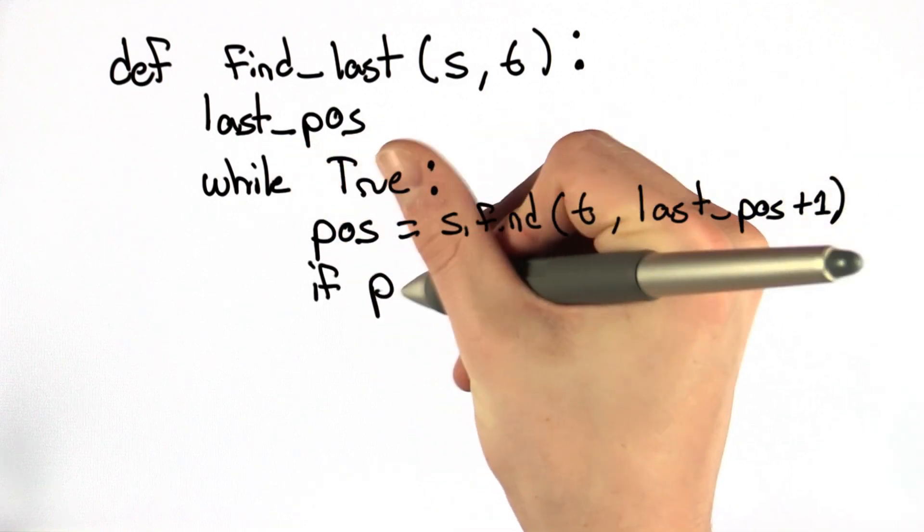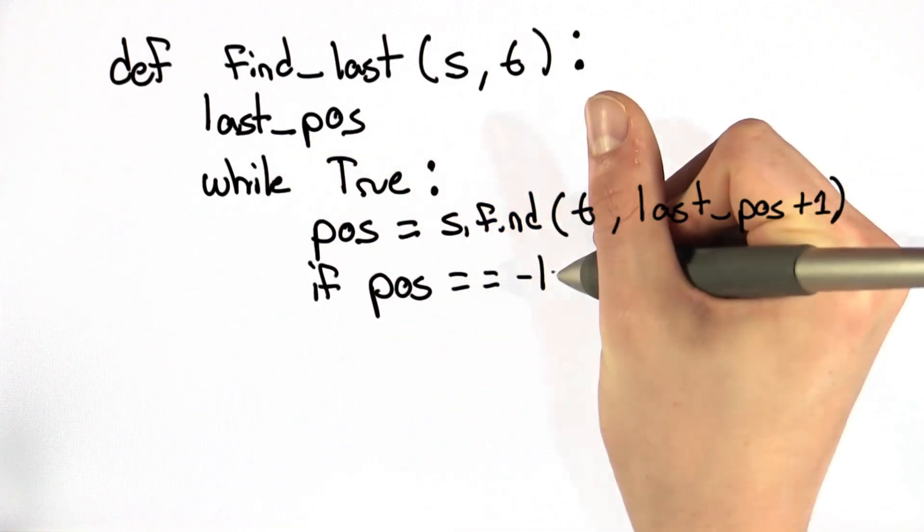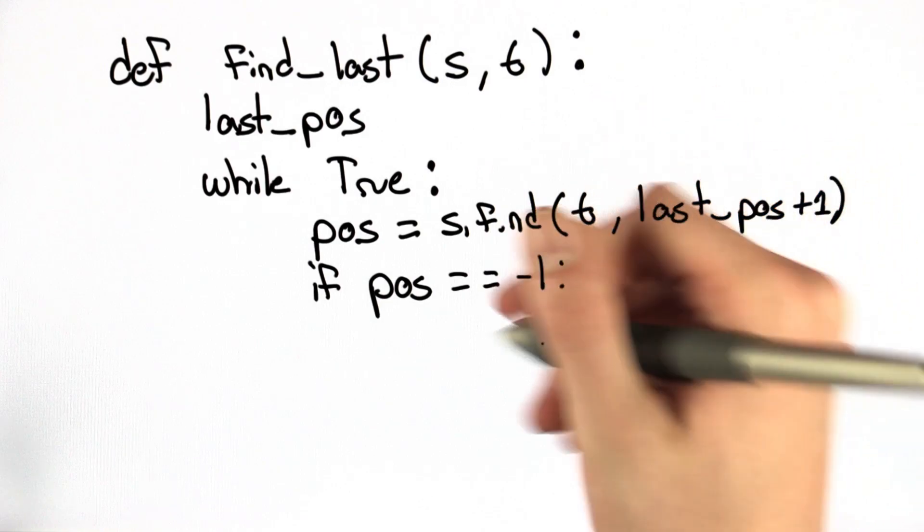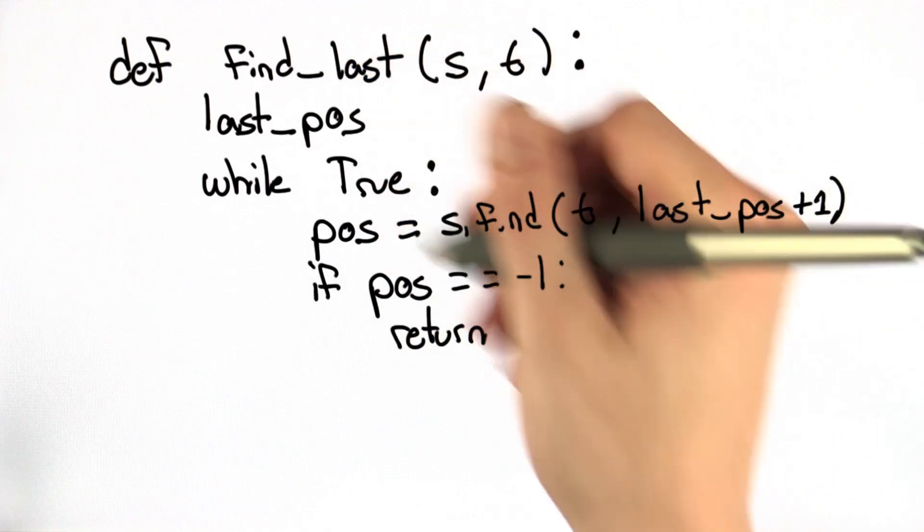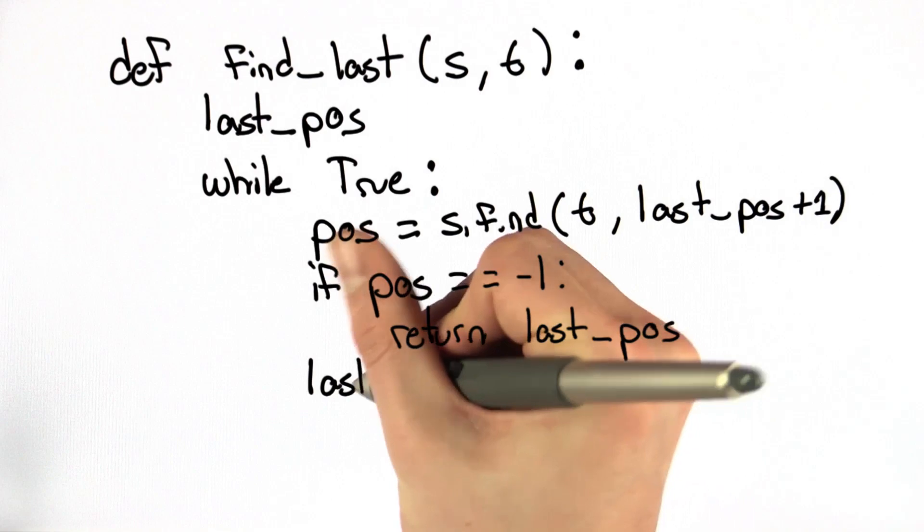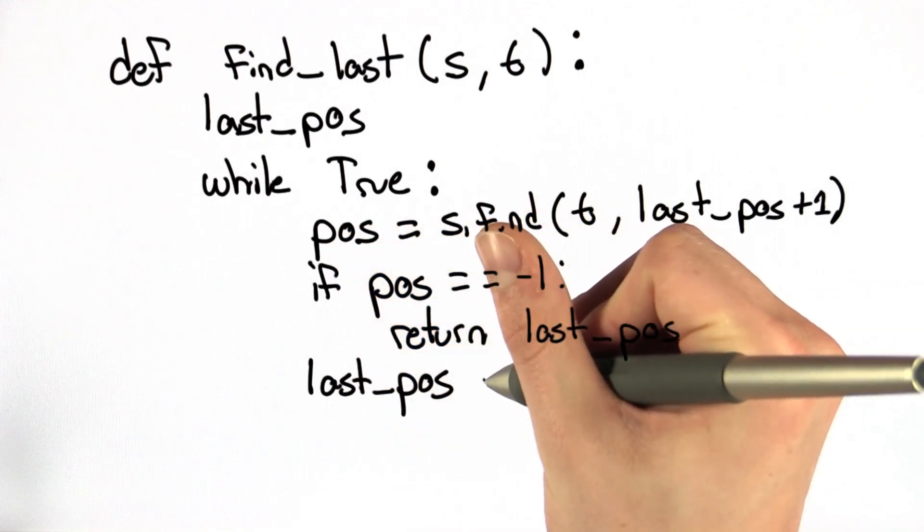If this function returns negative 1, that means we didn't find another occurrence of t. So we want to return the previously found occurrence which we stored in last_pos. Otherwise, we want to update last_pos with the position that we just found.